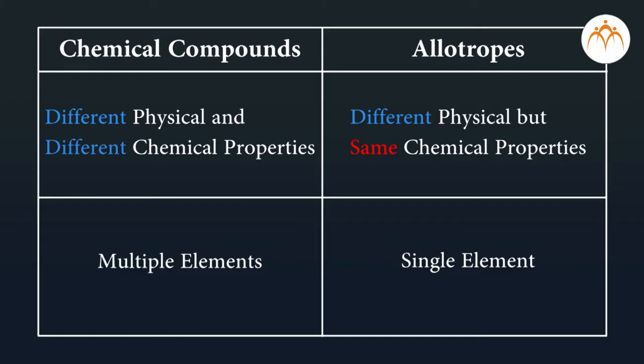Remember, chemical compounds have different chemical and physical properties. So they differ in both of these cases. In case of allotropes, we are only talking about the difference in physical properties, but there exists a similarity in their chemical properties.